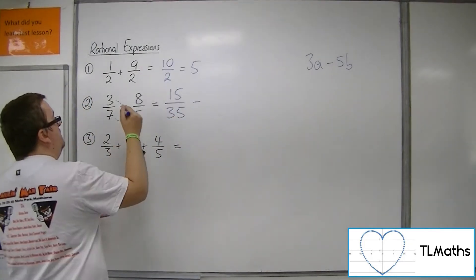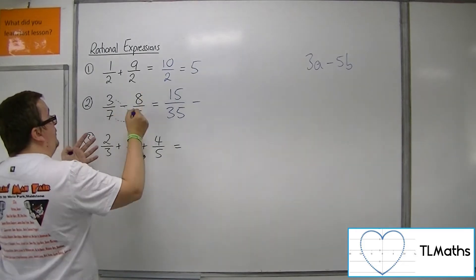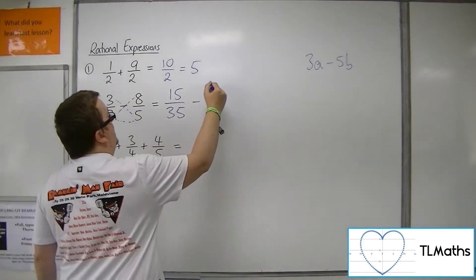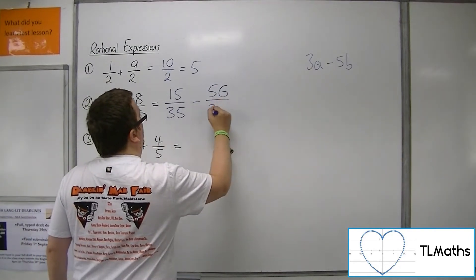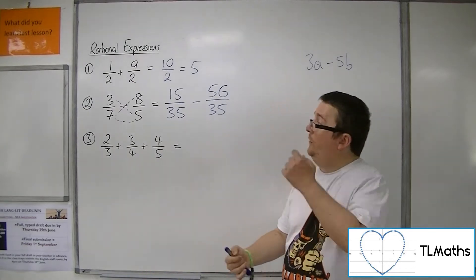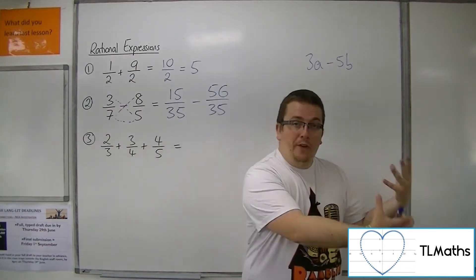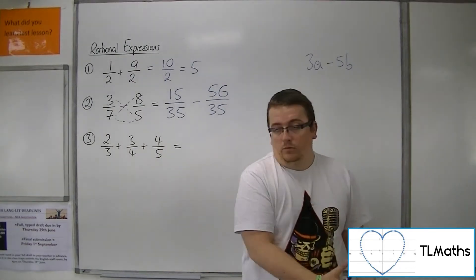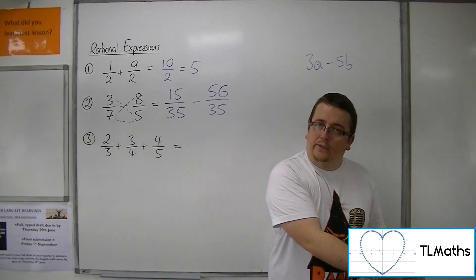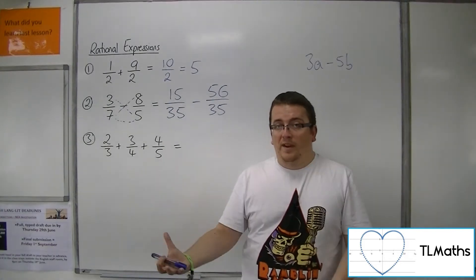What it does is it gives me what I want, this common denominator. Because then if I multiply the second fraction, top and bottom, by 7, then I get 56 over 35. So now I've got 15 35ths and I'm taking away 56 35ths. Or I should say 35ths. 15 35ths, 56 35ths. So I've now got the same denominator.